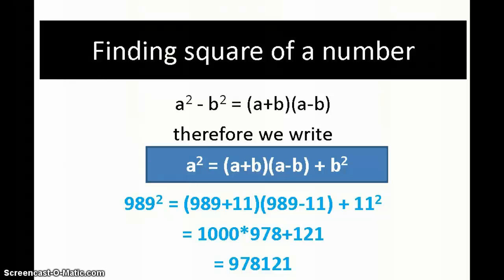What we are doing here is using the identity: a² minus b² equals (a+b)(a-b). Therefore, a² equals (a+b)(a-b) plus b². The same principle we are applying. Just check the example: 989 squared can be written as (989+11)(989−11) plus 11². Here, 989 plus 11 gives 1000, and 989 minus 11 gives 978. So I multiply 978 into 1000 giving 978000, and then add 121, making it 978121.